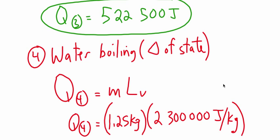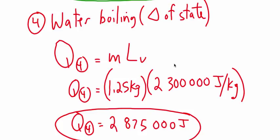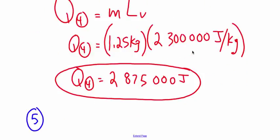So the latent heat of vaporization for water is 2,300,000 joules for every kilogram of water that you have. Very big number. Huge. So we multiply that out. That's 2,875,000 joules of energy just to take that water and turn it into steam.